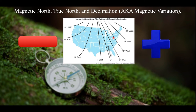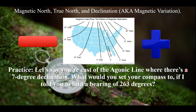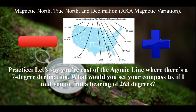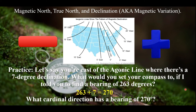Practice problem: you're east of the agonic line where there's a 7-degree declination, and you're told to find a bearing of 263 degrees. Since you're east of the agonic line, think of the positive side of the number line — you add. So 263 plus 7 equals 270 degrees. You must set your compass to 270 degrees. What cardinal direction is 270 degrees? West.